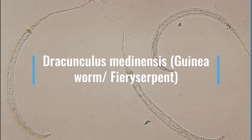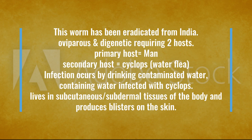Another example is Dracunculus medinensis — we call it the guinea worm, also called the fiery serpent. One interesting thing is that this worm has been eradicated from India. It is oviparous and digenetic, meaning it has two hosts: first is man, and second is Cyclops. Infection occurs by drinking contaminated water containing infected Cyclops.